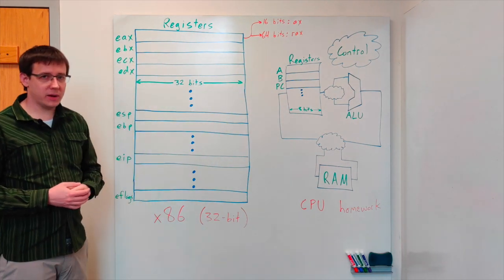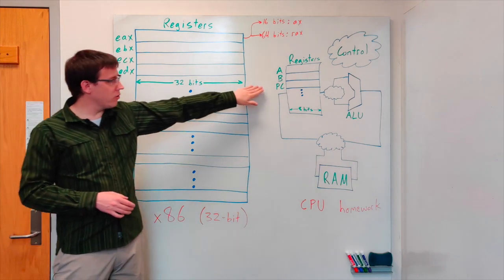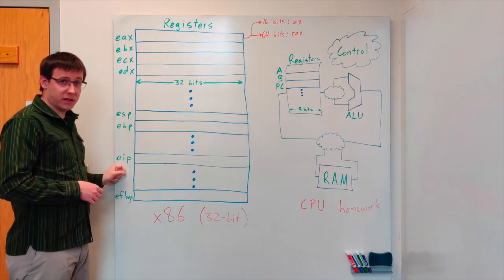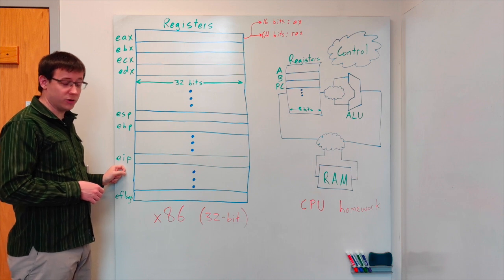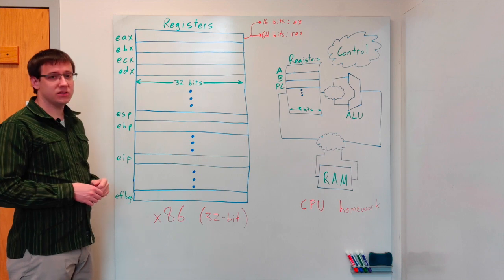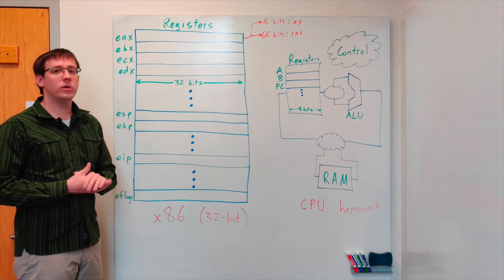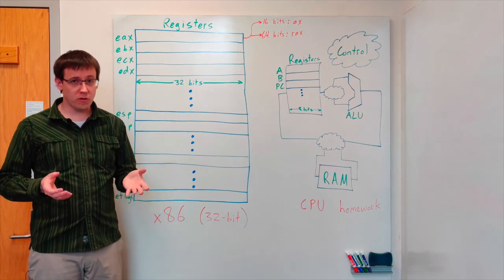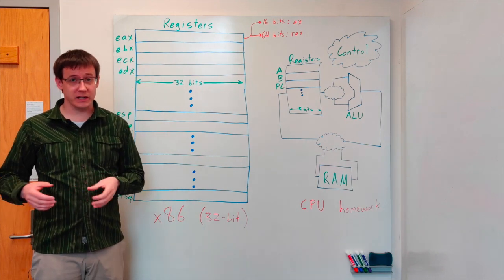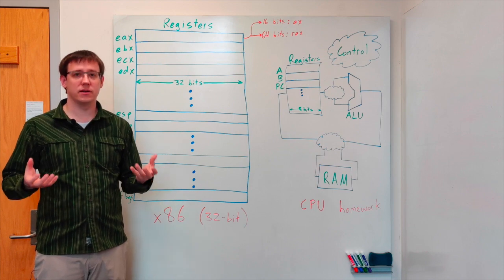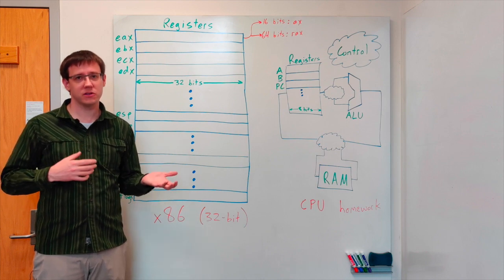We also have an equivalent to the program counter from our Logisim homework. In x86 the program counter is referred to as the instruction pointer. So IP stands for instruction pointer which means the same thing as the program counter from our homework. The program counter and the instruction pointer registers behave identically. They always store the address of the next instruction we're going to execute in our program.